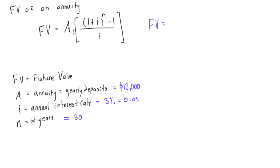well first of all our annuity is $12,000, so $12,000 times, now what are we gonna have, we will have 1 plus 0.03 all raised to the power of 30, then we're gonna subtract 1 from that, and then we'll put this over 0.03.